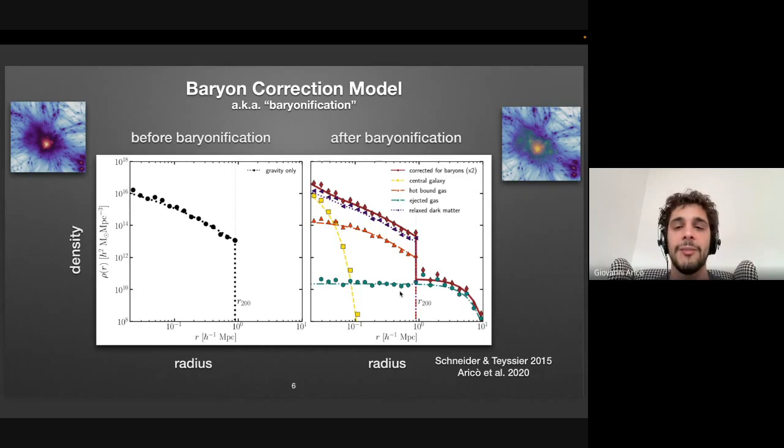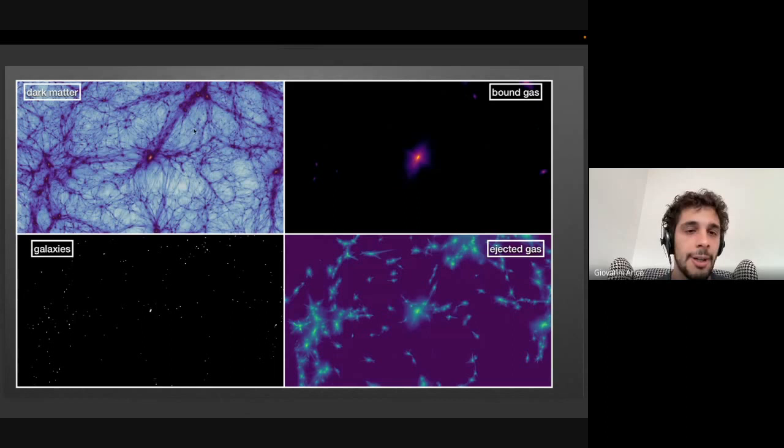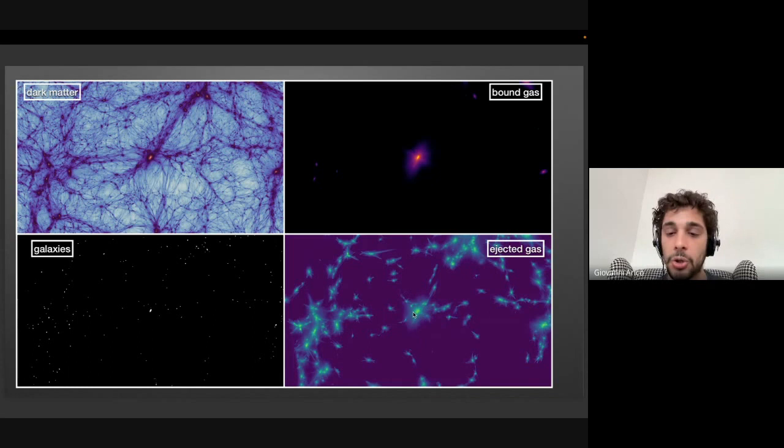So after you baryonify your simulation, you will have different baryonic fields in your simulation. As we can see in this plot, in the top left panel, you would see the dark matter-only simulation that is before baryonification. But after baryonification, on top of the dark matter, you would have also some bound gas, some gas that resides inside halos, some part of the gas that is ejected from the halos is this bottom right panel, whereas you will have also some galaxy field.